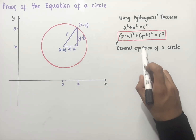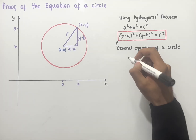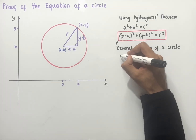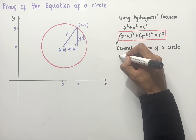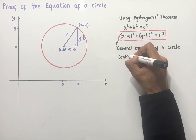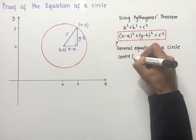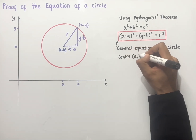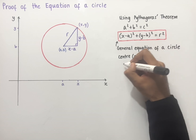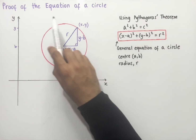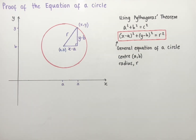And so this is the general equation of a circle, which has a center with coordinates (a, b) and a radius labeled as r. That is the proof of the equation of a circle.